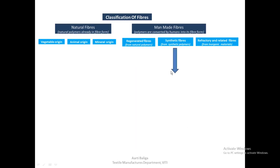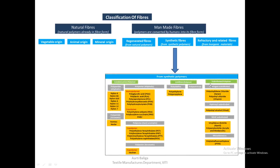The second classification is synthetic fibers, which come from synthetic polymers. There is no natural base raw material in the production of synthetic fibers — they are produced in a lab using chemicals. These can be classified into three categories: condensation polymer, addition polymer, and substituted polymer.